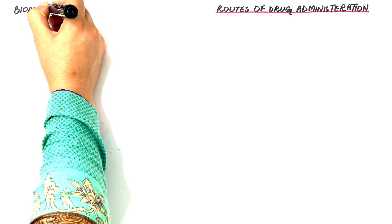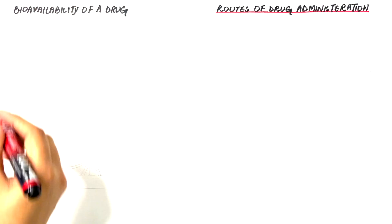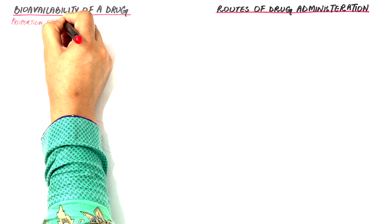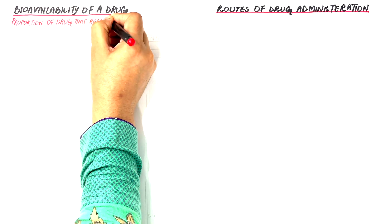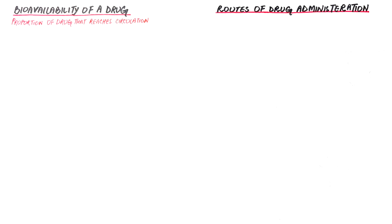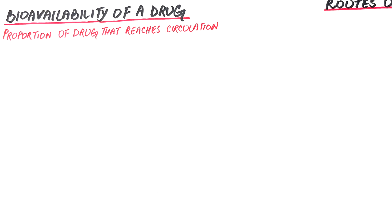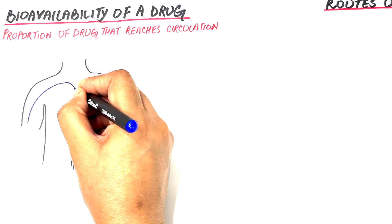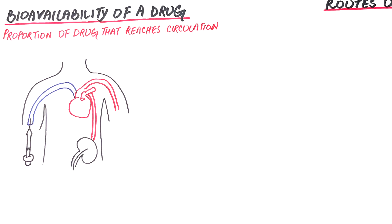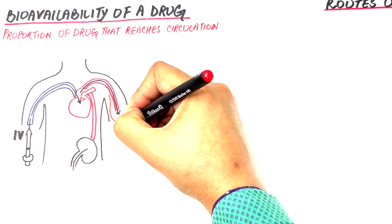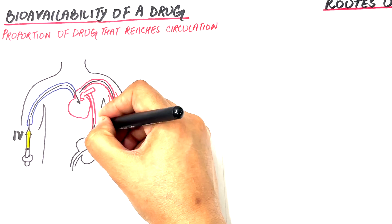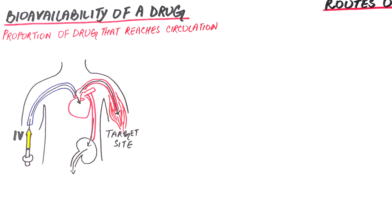The bioavailability of a drug is the proportion of a drug that reaches the systemic circulation and is therefore available for distribution to the intended site of action. Medicines given as intravenous or IV injections are said to have 100% bioavailability as they directly enter into the circulation and reach the target site rapidly.